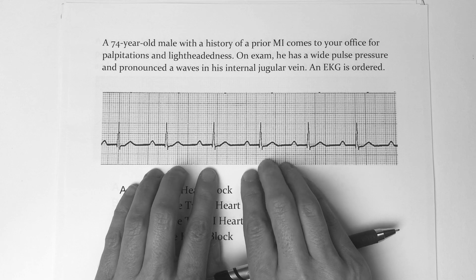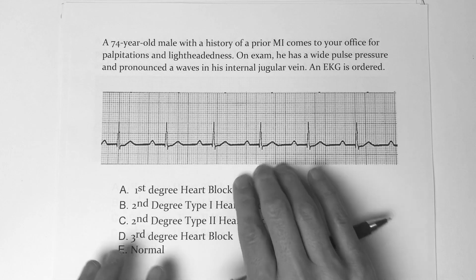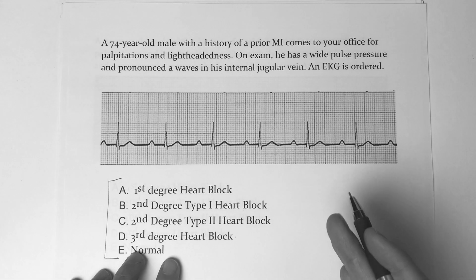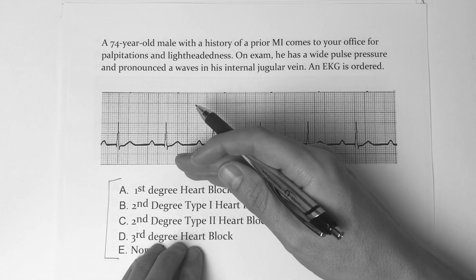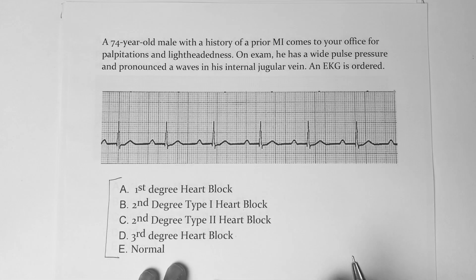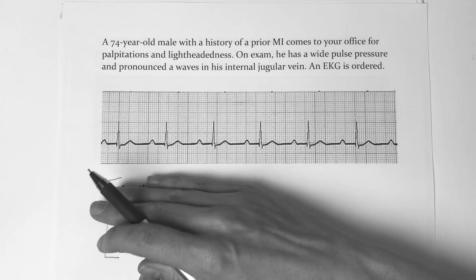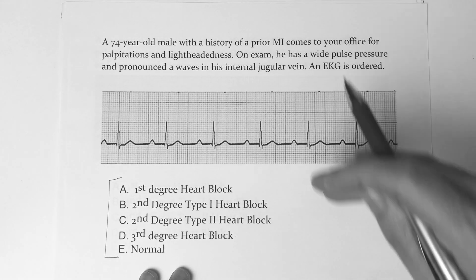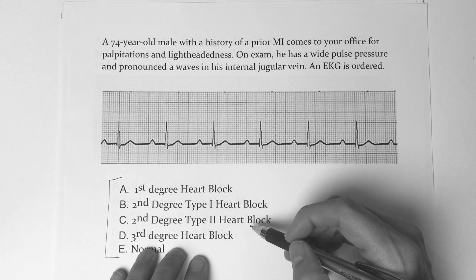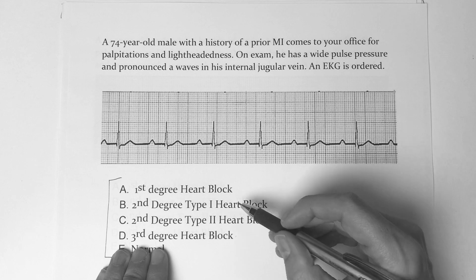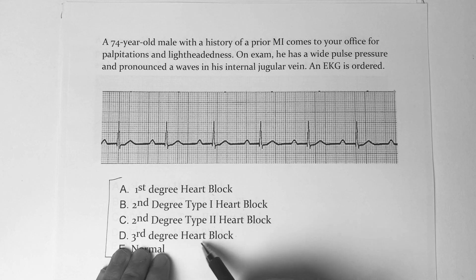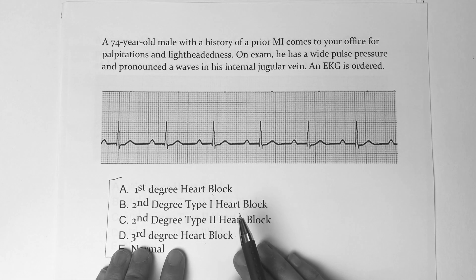When you look at your answer choices and you say, I think they're trying to test me on heart blocks — you have to hope that on Step 1 they at least guide you into what they're looking at, because given just the EKG alone you'd have to assess for basically everything and match it up to the symptoms. There are four basic ones: first-degree heart block, second-degree Mobitz type 1, second-degree Mobitz type 2, and third-degree heart block. Each one has its own characteristics.